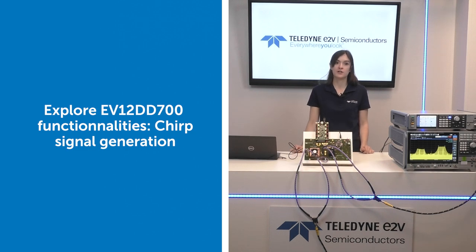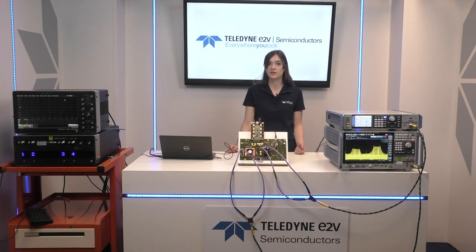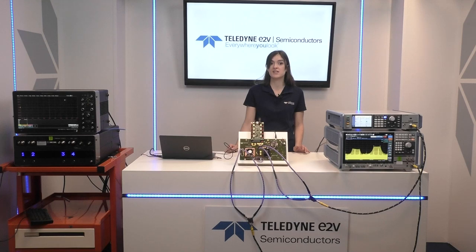Do you want to start the evaluation of the DAC EV12 DD700? Do you want to take advantage of its two channels, capable of generating signals from low-frequency to K8-band in multiband and simultaneously? You can benefit from its digital features enabling unprecedented levels of dynamic RF system reconfiguration on the fly. Start evaluating its RF performances and digital-enabled capacities by performing a chirp signal generation with our EV12 DD700 FPGA EVM and the associated GUI.